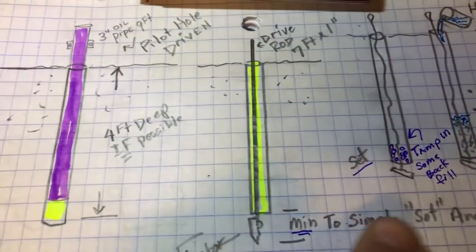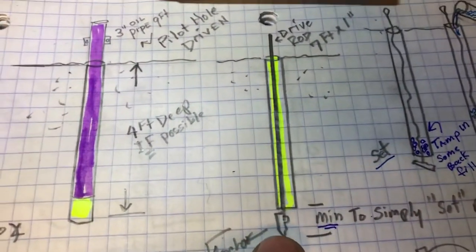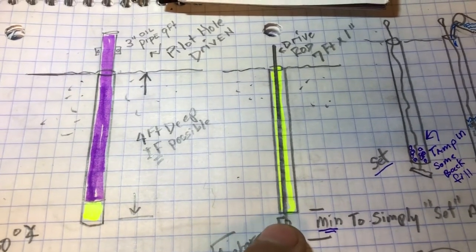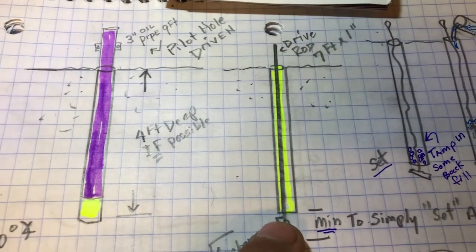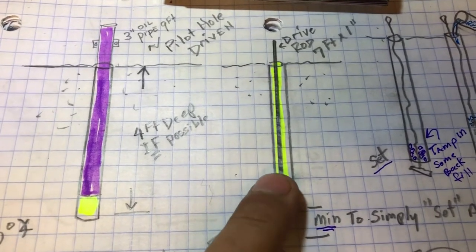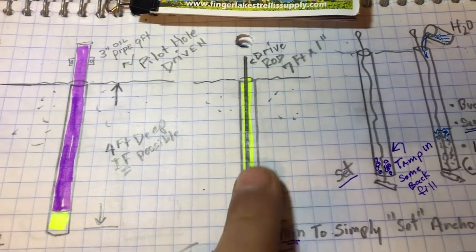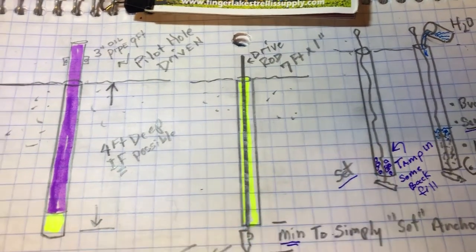But as you drive the drive rod in, I'll tell you, it's got to be in straight or it's going to bend or a rock can bend it. And then additionally, when you pull that drive rod out, you've got to pull it right straight up out perfectly or otherwise it bends the post, the driver.